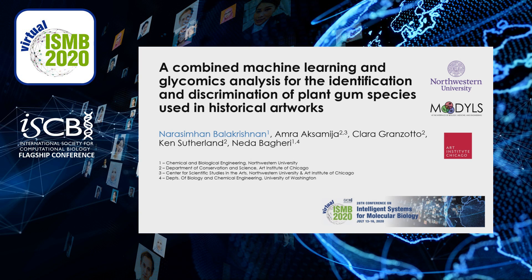Hello, my name is Narsimhan Balakrishnan and I'm a PhD candidate at Northwestern University. Today I'm excited to be talking to you about some work that involves machine learning and glycomic analysis for the identification and discrimination of plant-gum species used in historical artworks. This is a collaboration with the Art Institute of Chicago and the Center for Scientific Studies in the Arts.